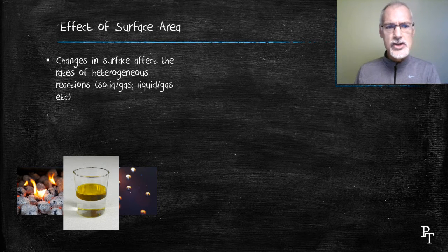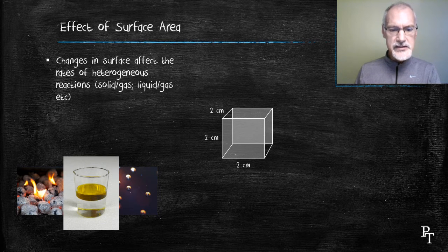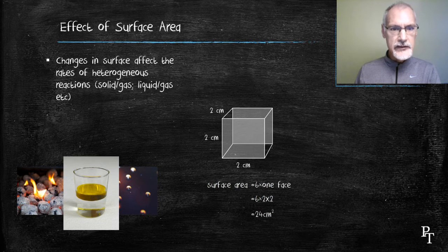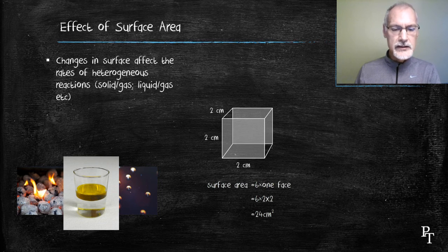Consider, if you will, a perfectly cubed piece of charcoal. The surface area of that charcoal is shown here. I can calculate that surface area because there are six faces on this cube, and each face is two by two, resulting in 24 square centimeters of reacting space — where oxygen might be able to collide with my carbon in the charcoal.